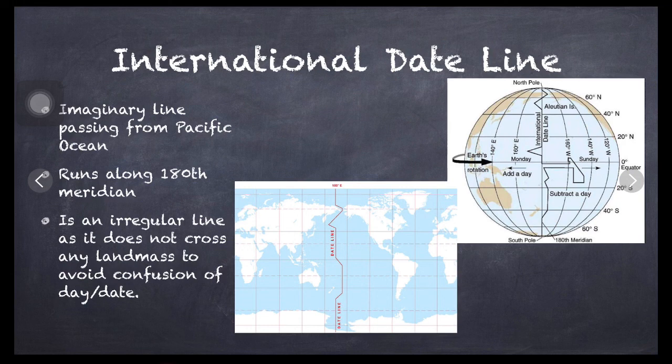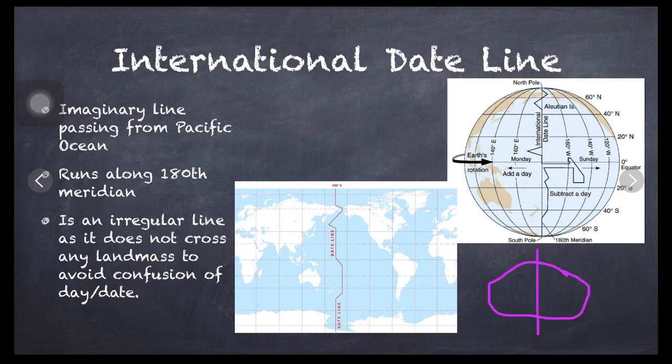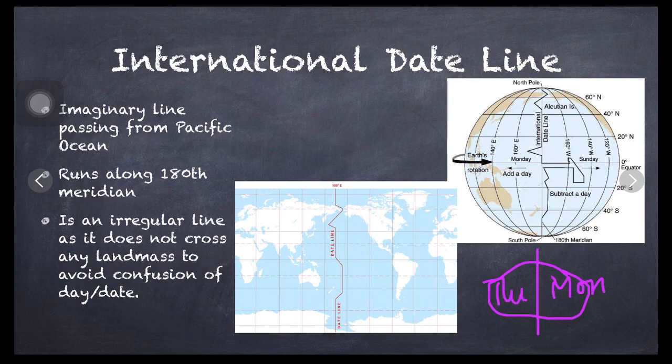It is an irregular line as it does not cross any landmass to avoid the confusion of day and date. Suppose it is a landmass and if international date line crosses it, so it will have confusion of day or date, as eastern hemisphere is ahead and western hemisphere is behind.